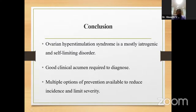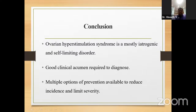In conclusion, ovarian hyperstimulation syndrome is mostly iatrogenic and a self-limiting disorder. Patients must be monitored continuously. Good clinical acumen is required to diagnose — do not miss oliguria, distended abdomen, etc. Multiple prevention options are available to reduce incidence and limit severity. At the medical management level, use metformin and cabergoline. On the day of trigger, change from HCG to GnRH agonist trigger. If doing IVF, always consider frozen transfer instead of fresh transfer.